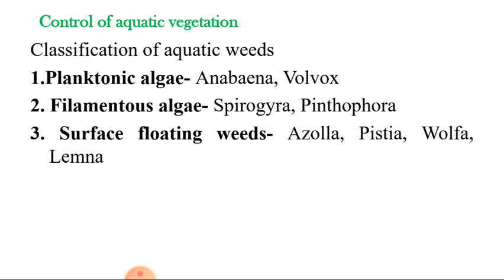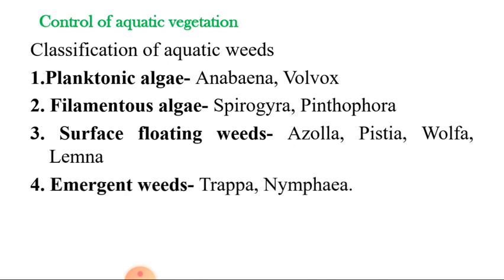The third type of weeds is surface floating weeds, such as Azolla, Pistia, Wolffia, and Lemna. These are common surface floating weeds that are not attached to the pond bottom but rather float upon the surface.